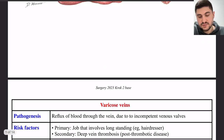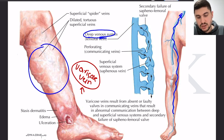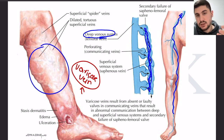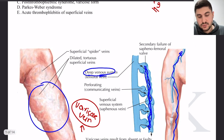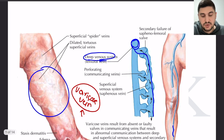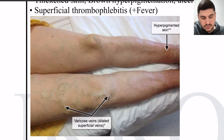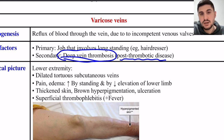The pathogenesis of varicose veins involves reflux of blood through the veins due to incompetent venous valves. Over time, the valves that should push blood upward fail under the pressure of accumulated blood. One cause of varicose veins is deep vein thrombosis: a thrombus in the deep vein system causes blood to accumulate in the superficial veins. When caused by DVT, this is called post-thrombotic disease.